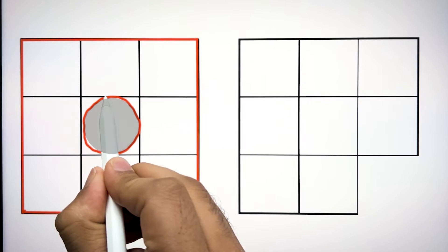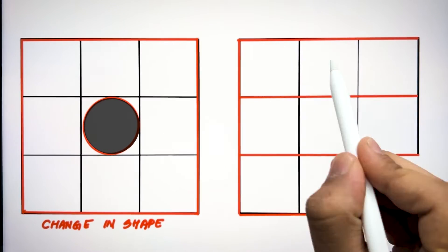Even we can change the shape of the space inside these nine grids, or we can shift the location of these squares.